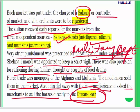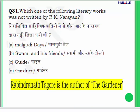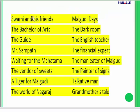Question 31: Which of the following literary works was NOT written by R.K. Narayan — Malgudi Days, Swami and His Friends, The Guide, or The Gardener? The answer is The Gardener, which was written by Rabindranath Tagore. R.K. Narayan's famous books include Swami and His Friends, The Bachelor of Arts, The Guide, Mr. Sampath, Waiting for the Mahatma, The Vendor of Sweets, and A Tiger for Malgudi.